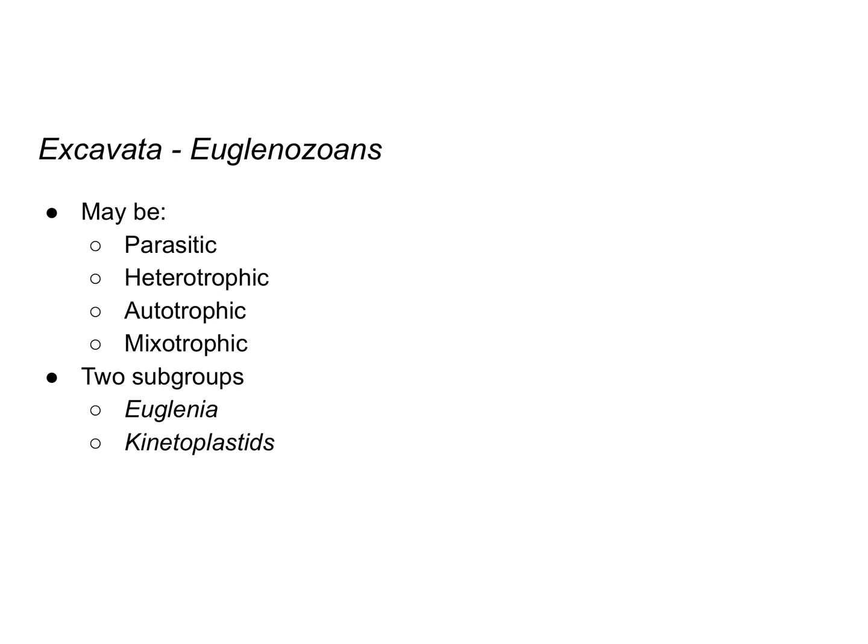The euglenozoans can vary in their metabolic strategy: some are parasitic, some are heterotrophic, some are autotrophic, and some are mixotrophic. Parasitic means living off a host and causing harm. Heterotrophic means eating other organic compounds or organisms. Autotrophic means making its own food through photosynthesis or chemosynthesis. Mixotrophic means they can switch between heterotrophic and autotrophic depending on conditions.